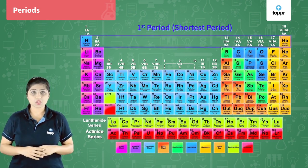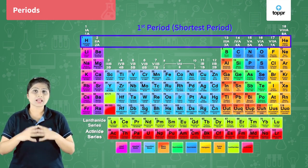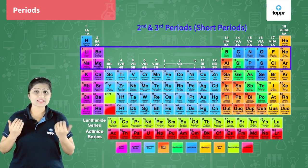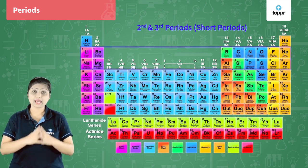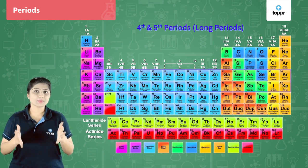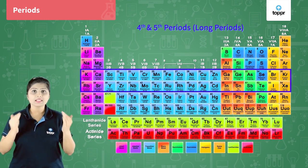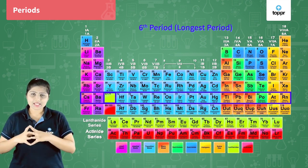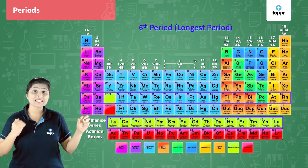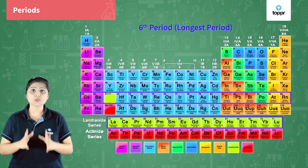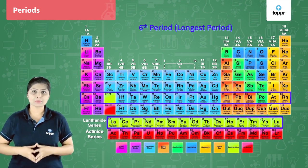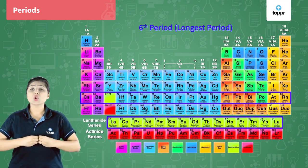Look at the first period. It has only 2 elements, so it is called the shortest period. Then look at the second and third periods. Both of them have 8 elements each, so they are called the short periods. Then the 4th and 5th periods both have 18 elements each, so they are called long periods. The sixth period already has 18 elements, plus 14 more elements placed below which belong to the sixth row itself, so total there are 32 elements in the sixth period. That is why it is known as the longest period.